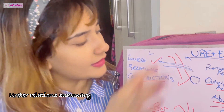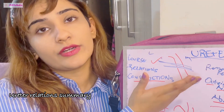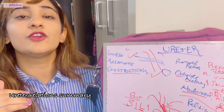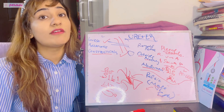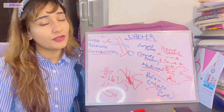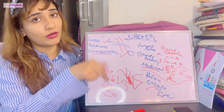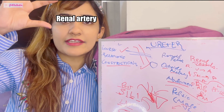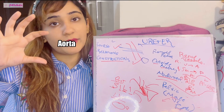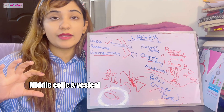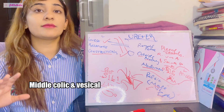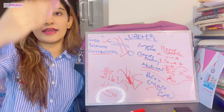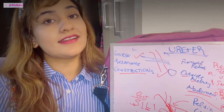Continuing the revision: lateral pelvic relations are all obturator structures. In males, the ductus deferens crosses lateral to medial; in females, the uterine artery crosses lateral to medial; and in males, the seminal vesicle lies below and behind the ureter. For blood supply: the upper part receives branches from the renal artery, the middle part from the aorta, and the lower part from the middle colic vesical artery. After mastering the relations, blood supply feels like a small hill after a big mountain.